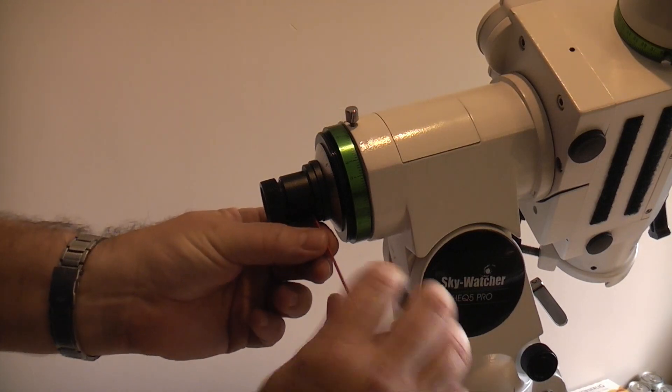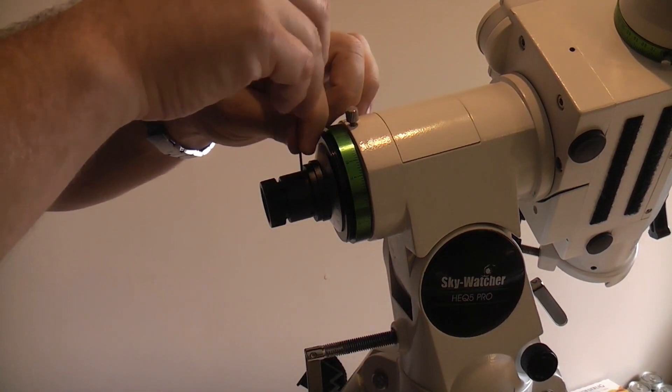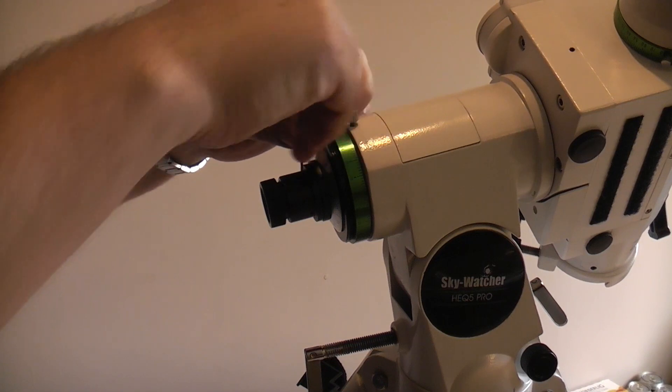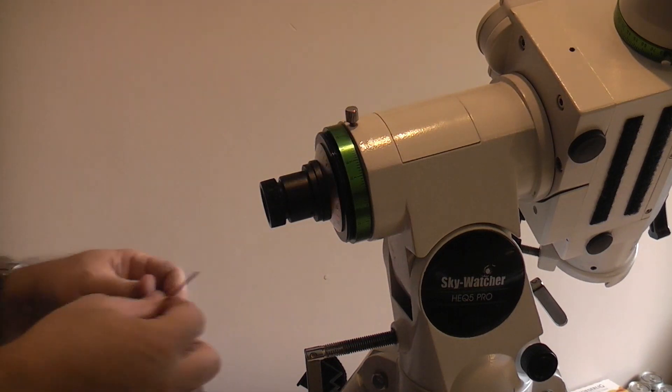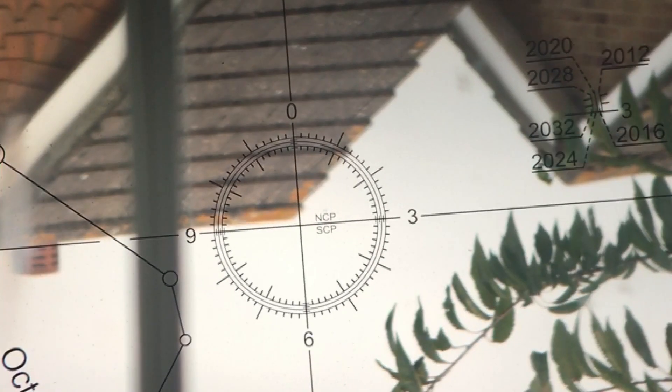So to adjust your calibration, you need to loosen one grub screw or two grub screws slightly, maybe half a turn, and then tighten another one. You can either loosen one and tighten two, or loosen two and tighten one, depending on the direction you're trying to move the graticule.